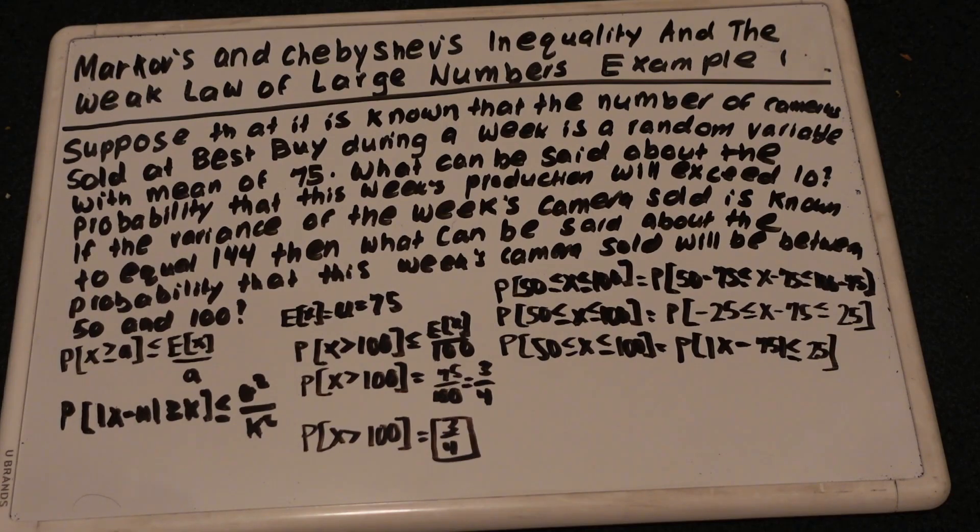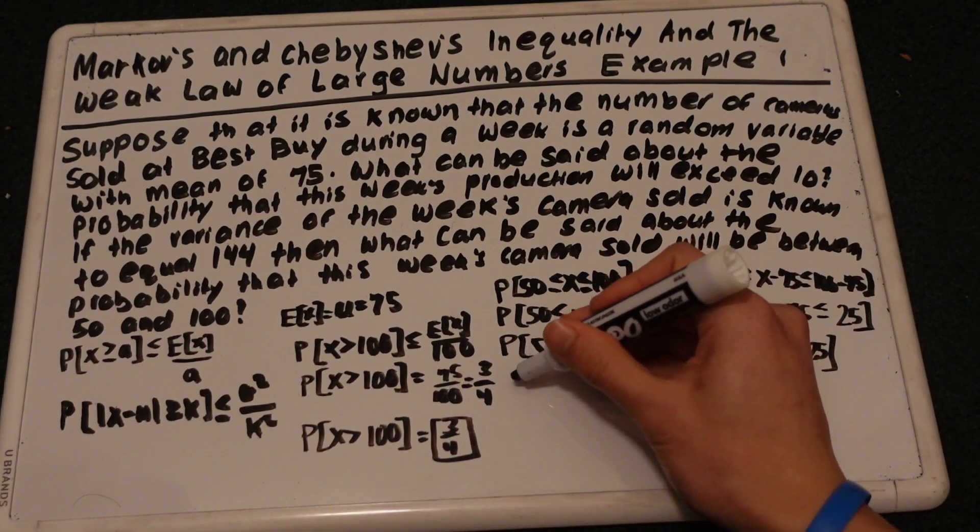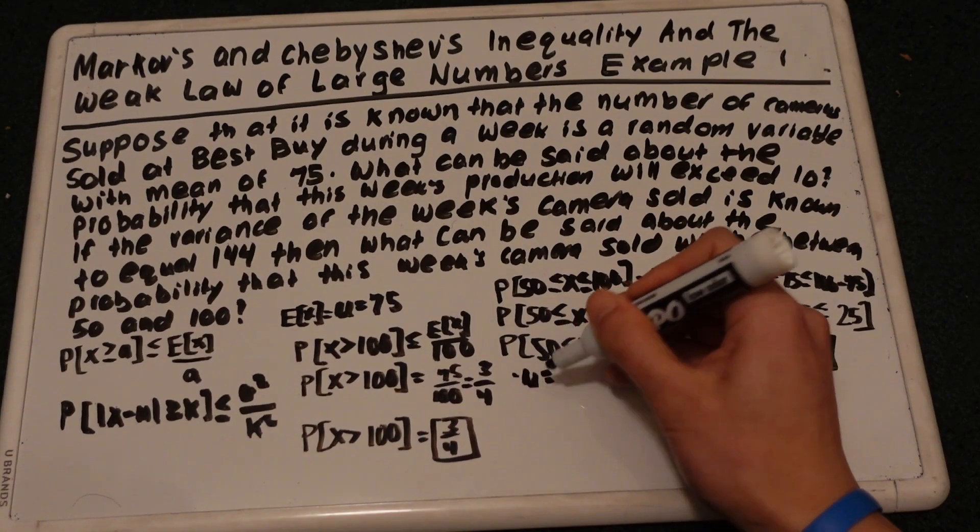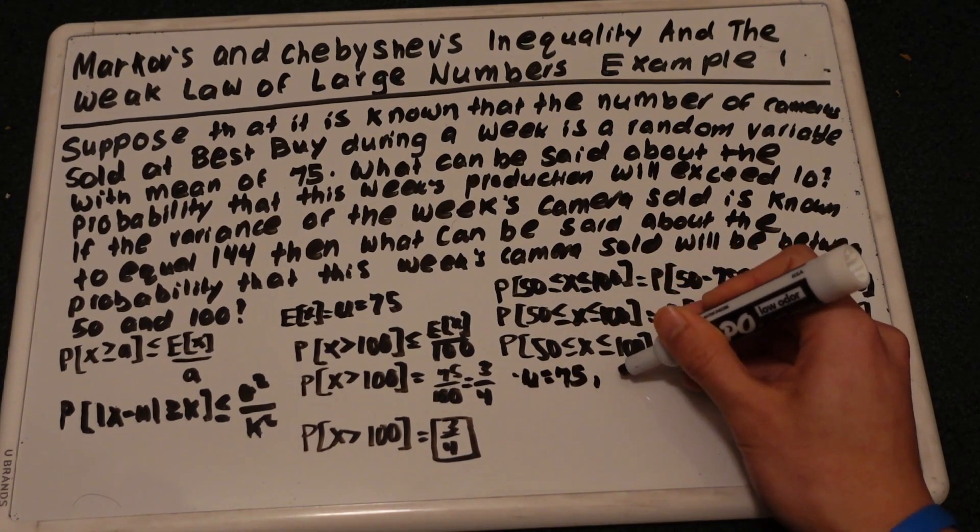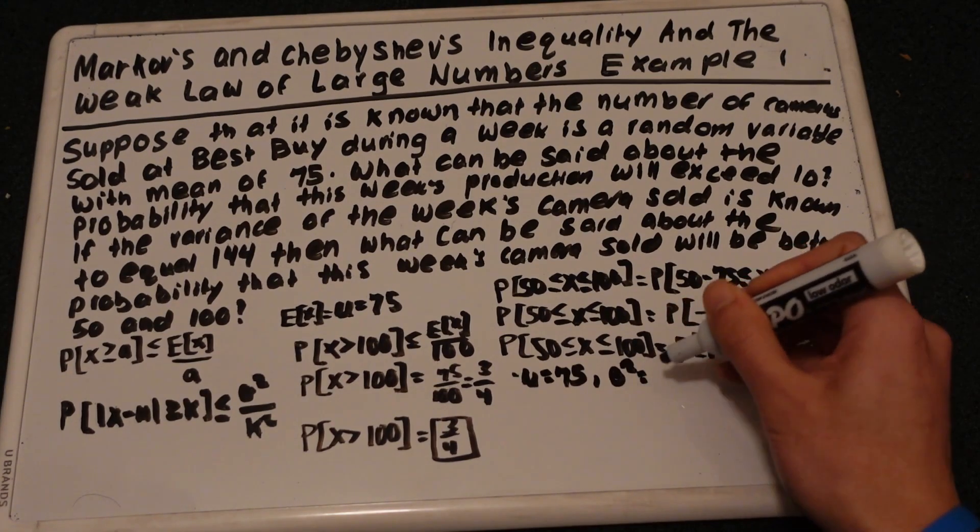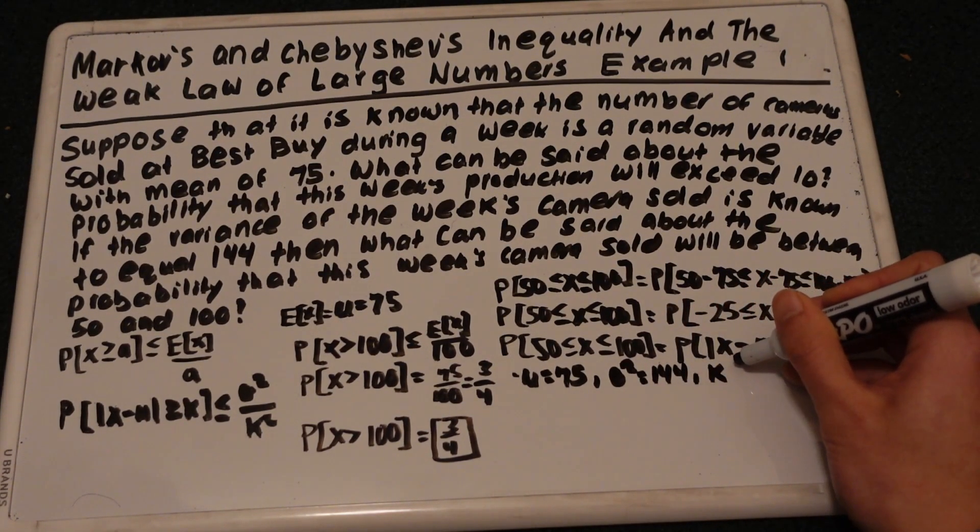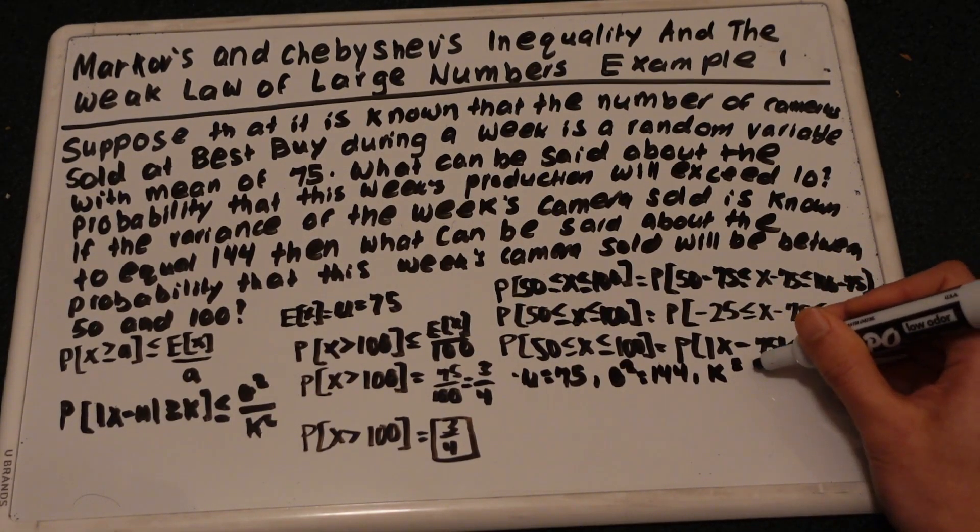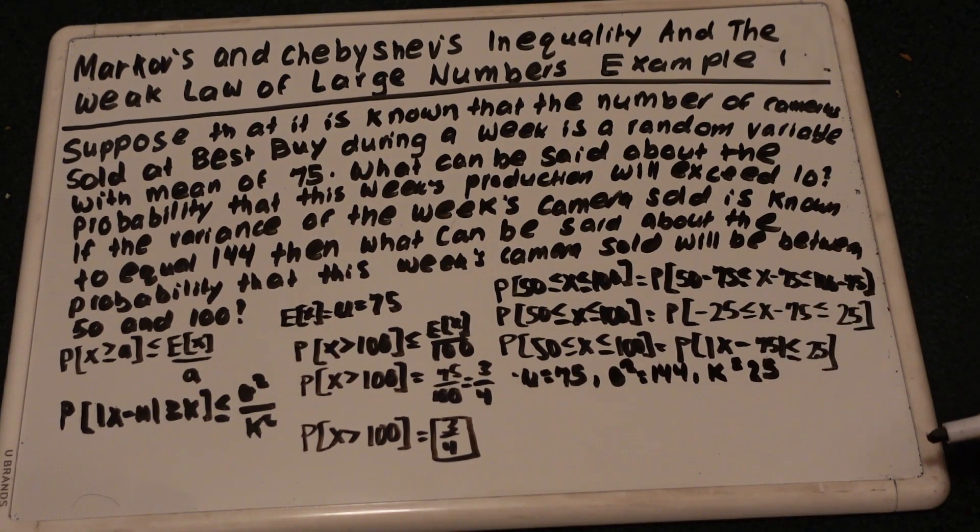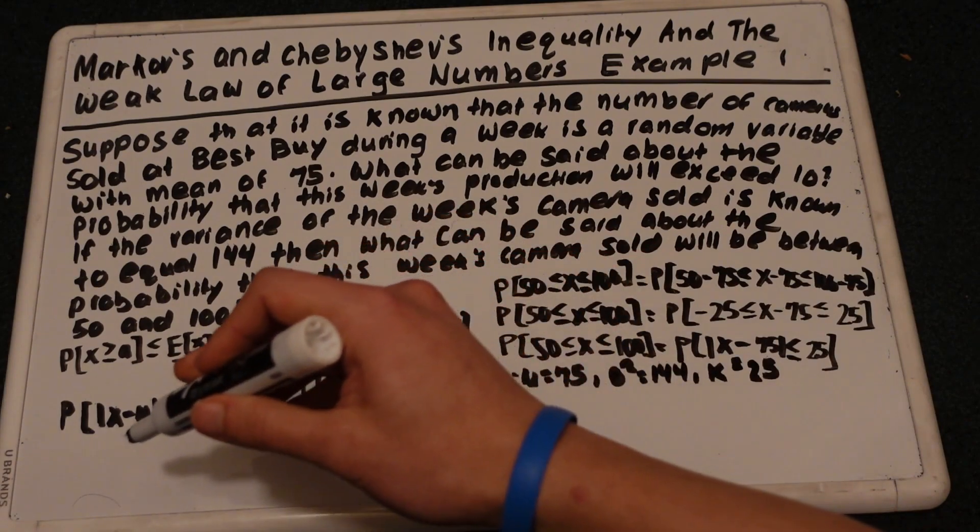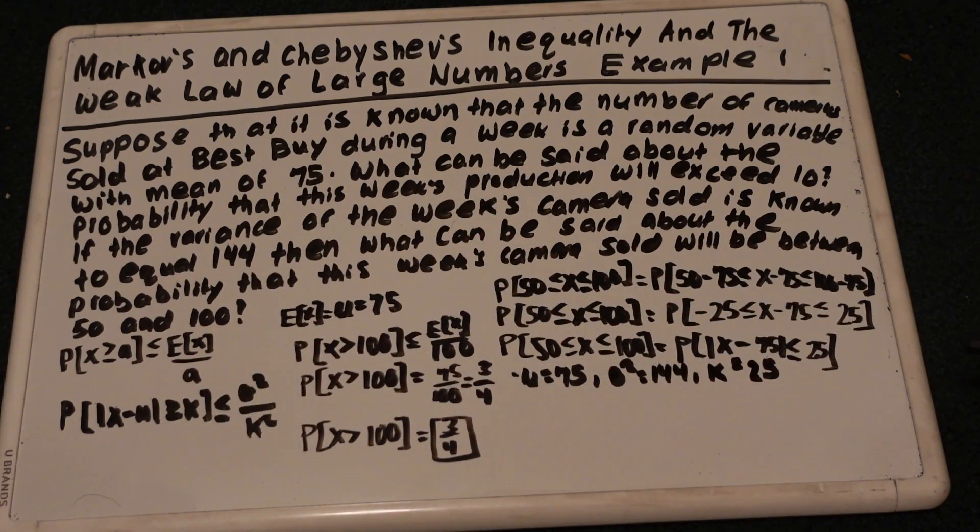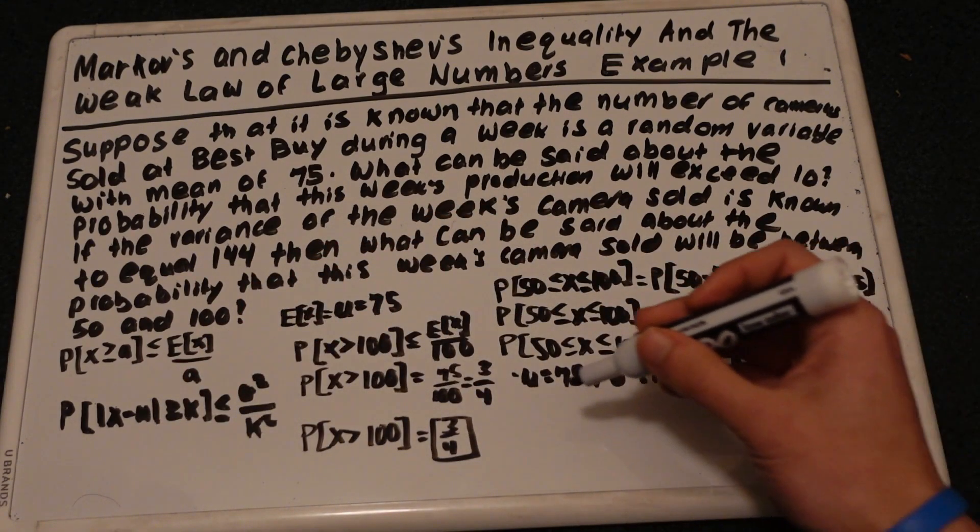And given that we have mu is 75, and the variance, which is 144, the standard deviation is 15. Let me write that down, mu equals 75. The variance is 144, and K is equal to 25. We can use the Chebyshev's inequality to figure it out. Let me write that down.